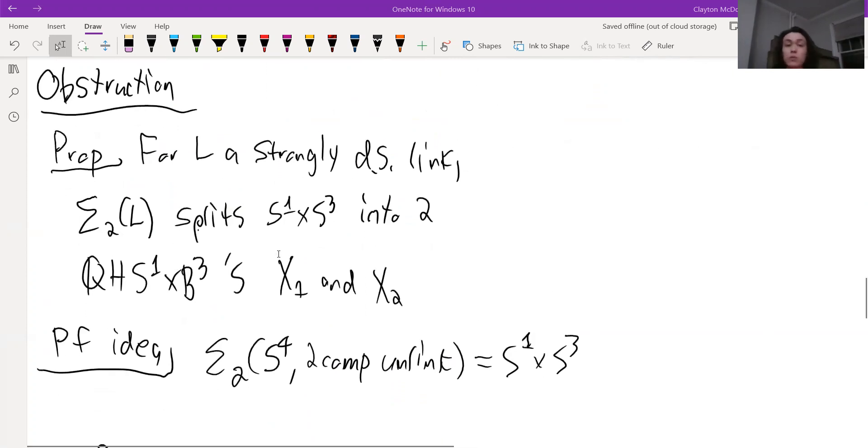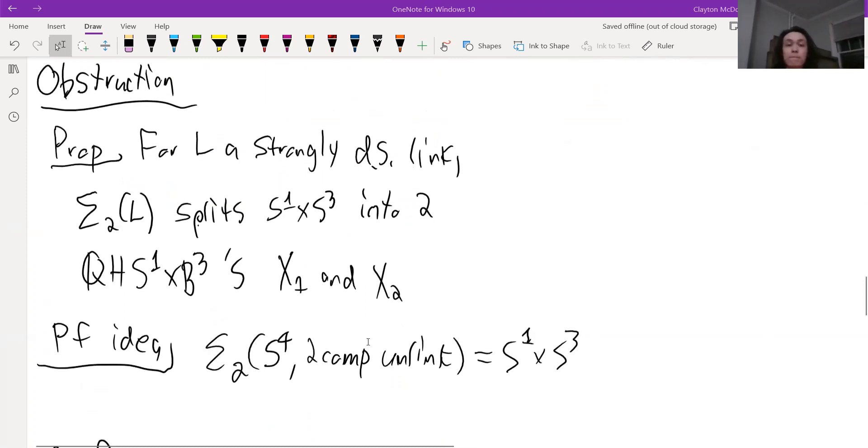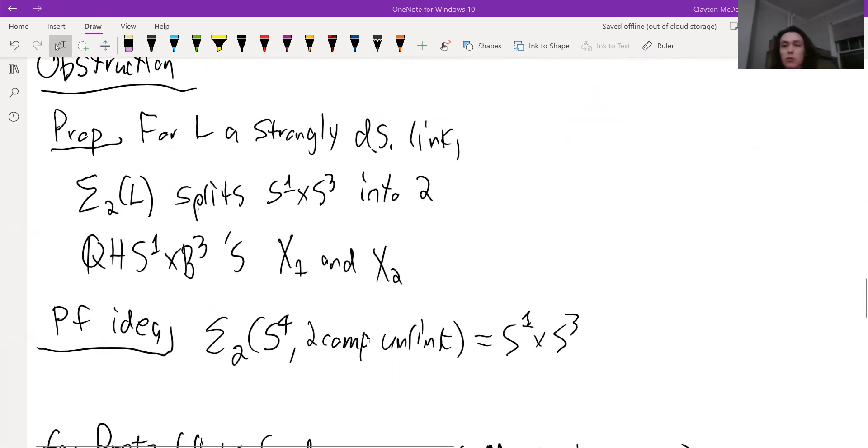So what's the idea there? Well, we know that the double branch cover of S4 branched along the two component unlink is S1 cross S3. And then we just think about how that restricts to the splitting sphere for L, the splitting S3.